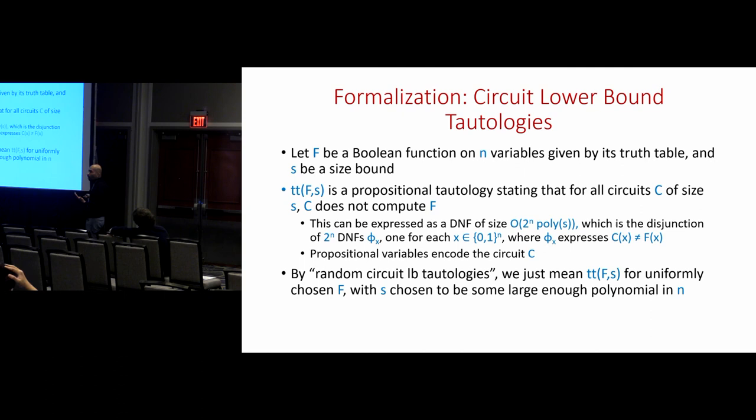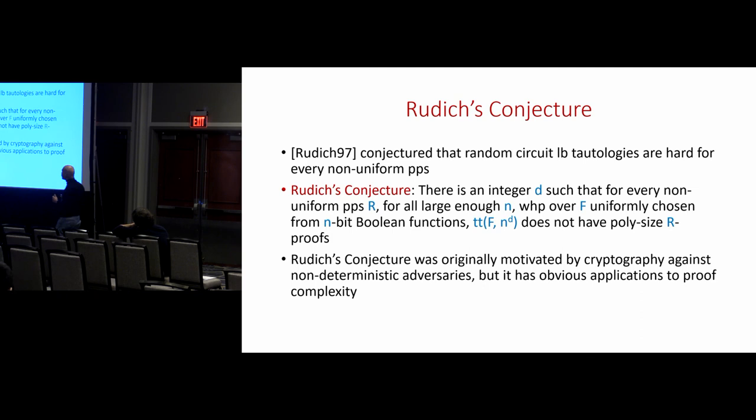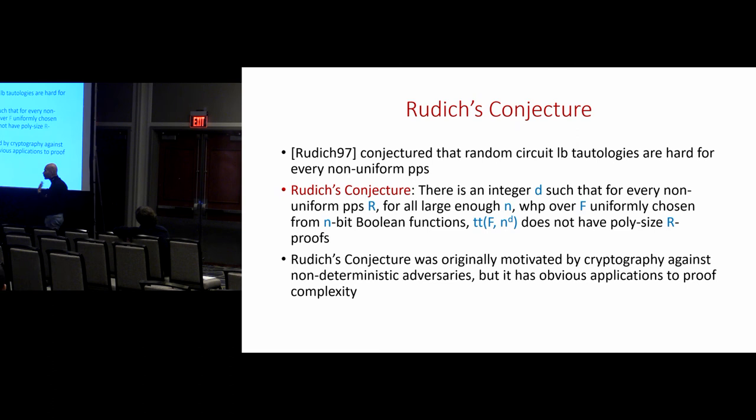There is a conjecture due to Rudich that random circuit lower bound tautologies are hard for every non-uniform PPS. This is the formal statement of Rudich's conjecture. Rudich was originally motivated by the question of cryptography against nondeterministic adversaries, but his conjecture has obvious implications to proof complexity, some of which he realized and others that have been developed in later work by Krajíček and others.